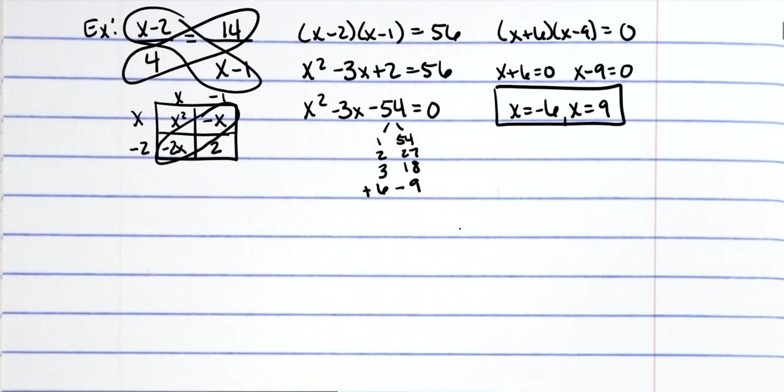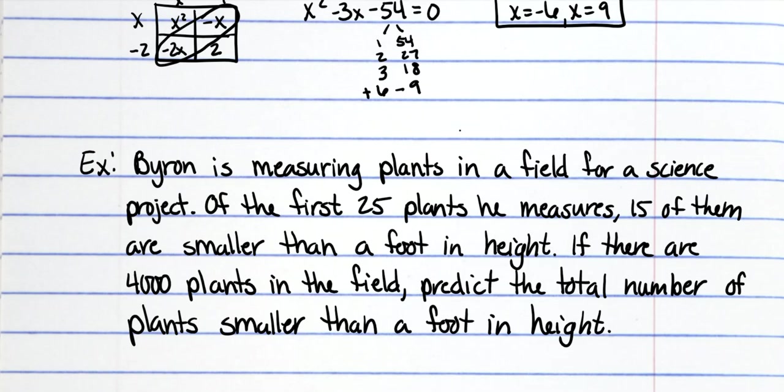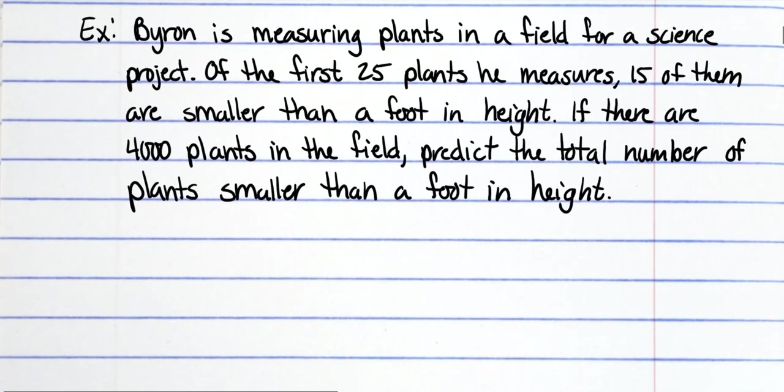Alright, because a lot of ratios and proportions are word problems, we do have two of those also. Just to make the video shorter, I'm going to say it and then pause, write it all out, and then unpause, so you guys will have to pause your screen and write it all out too. So Byron is measuring plants in a field for a science project. Of the first 25 plants he measures, 15 of them are smaller than a foot in height. If there are 4,000 plants in the field, predict the total number of plants smaller than a foot in height.